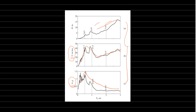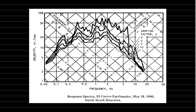There is another graph that combines all three response spectra together. On the x-axis is frequency, and on the y-axis is velocity. Displacement and acceleration values can also be read from the same graph. For example, for a structure with a time period of 1 second and 10% damping, you find the velocity on the y-axis, then cut at 45 degrees to get displacement, and project down to get acceleration.